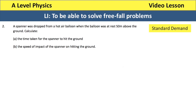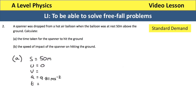Question two. A spanner was dropped from a hot air balloon when the balloon was at rest 50 metres above the ground. We want to calculate the time it takes for the spanner to hit the ground. We lay out S, U, V, A and T. We know it's 50 metres above the ground so it will fall 50 metres. It was initially at rest so U is zero, and it's gravity pulling the spanner downwards so the acceleration is 9.81 metres per second squared.